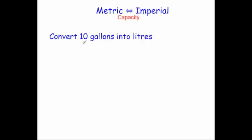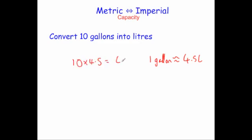The next question says convert 10 gallons into liters. One gallon is approximately equal to 4.5 liters, so to find 10 gallons you multiply by 4.5. Ten times 4.5 equals 45, so 10 gallons is approximately equal to 45 liters.